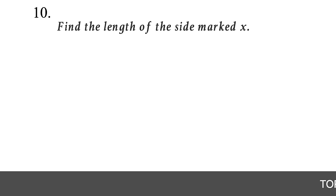Question 28. Which of the following is a point on the line y = 2x - 7? For a point to lie on the line, input the x value and check if you get the corresponding y value. Try choice A (2, 5): 2(2) - 7 = -3, not 5, so A is wrong. Try choice B (3, -1): 2(3) - 7 = -1 ✓. So choice B is the answer.